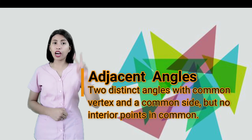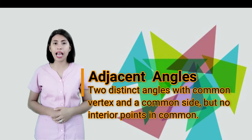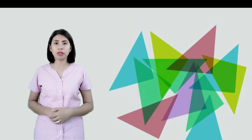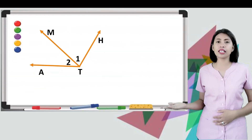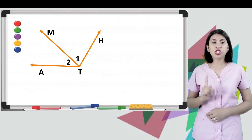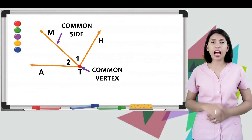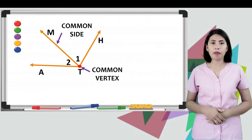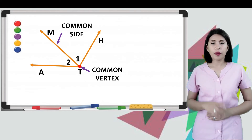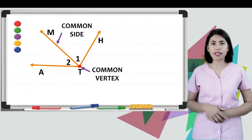The third angle pair is adjacent angles. Adjacent angles are two distinct angles with a common vertex and a common side, but no interior points in common. Consider this example: angle 1 and angle 2 share a common vertex at point T and a common side at ray TM, with no interior points in common. Therefore, angle 1 and angle 2 are adjacent angles.